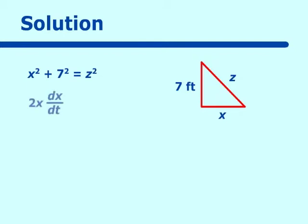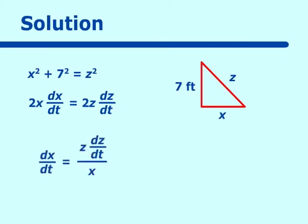Taking the derivative gives us 2x dx/dt — everything taken with respect to t. Seven is a constant, so its derivative is zero. That equals 2z dz/dt. Cancelling the twos and solving for dx/dt gives us z dz/dt over x. We know x is 20 and dz/dt is equal to 2. We do not yet know z, but we can find it by substituting into our right triangle.